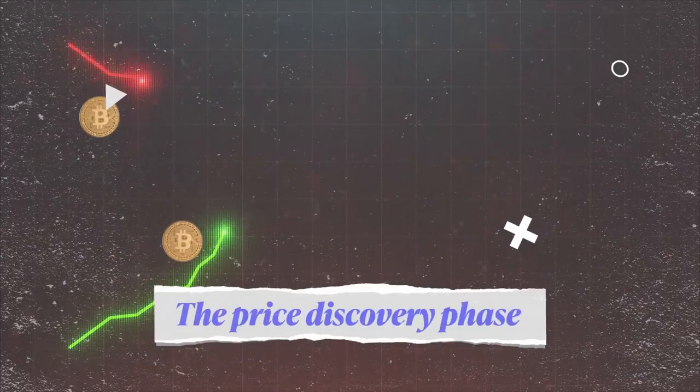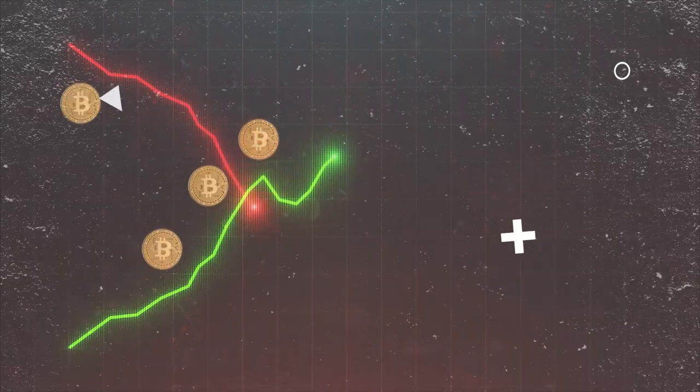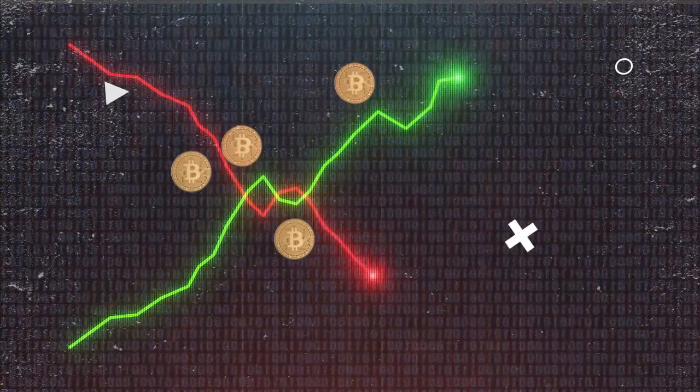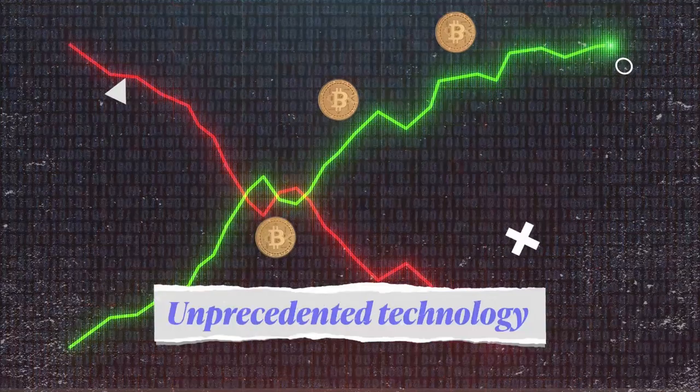Because the crypto market is so young, it's still in the price discovery phase. This is the most volatile cycle of any asset's life, especially when it comes to unprecedented technology.